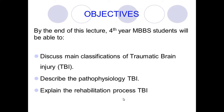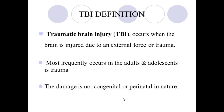In the previous lecture we talked about Parkinson's disease and spinal cord injury. In this lecture we will discuss traumatic brain injury, another significant cause of physical disability. The objectives for 4th year MBBS students are: to discuss the main classifications of traumatic brain injury, describe its pathophysiology, and explain the rehabilitation process of traumatic brain injury.